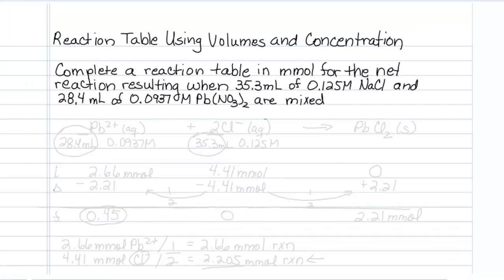Here's how to do a reaction table using volumes and concentration. The question reads: complete a reaction table in millimoles for the net reaction resulting when 35.3 mL of 0.125 molar NaCl and 28.4 mL of 0.0937 molar lead nitrate are mixed.